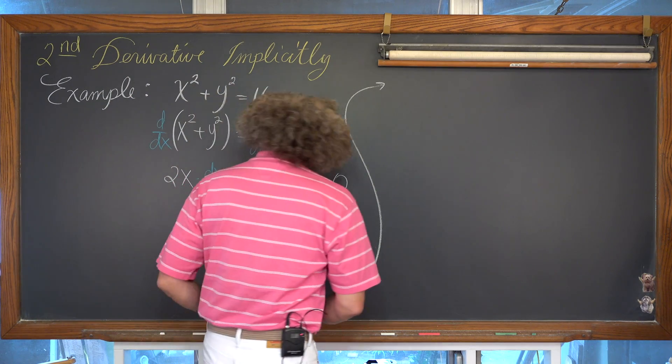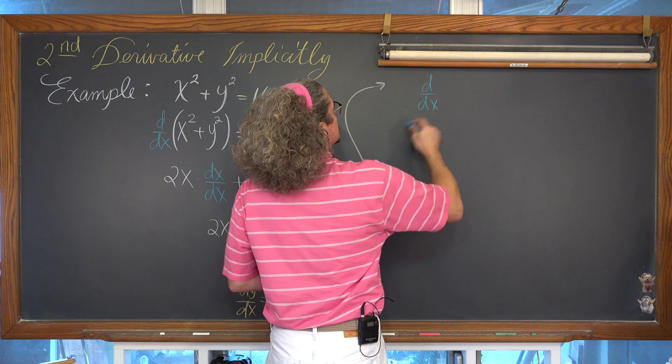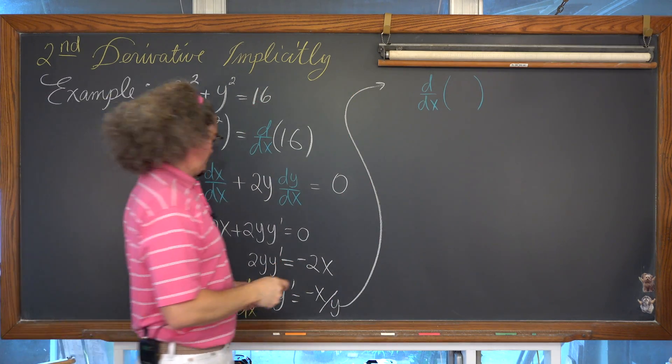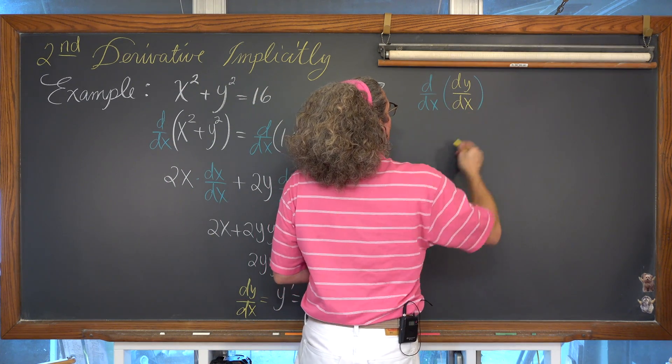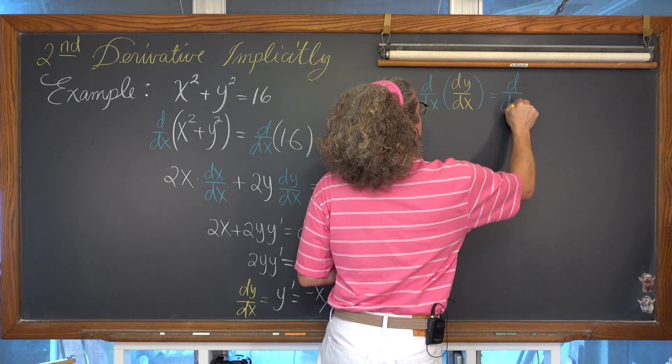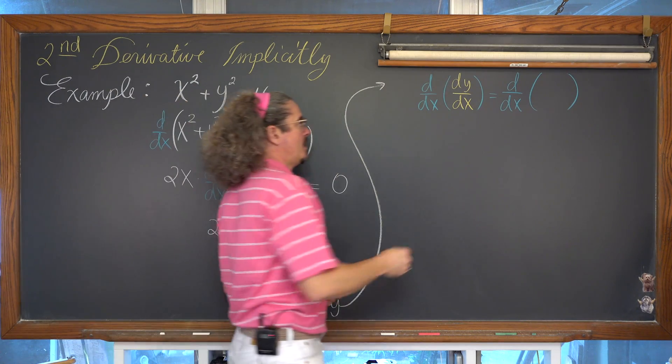So on the left-hand side, one more time, we're going to take the derivative with respect to x of, on the left-hand side, dy over dx. And we're going to be taking the derivative with respect to x of our right-hand side, which is again negative x over y.